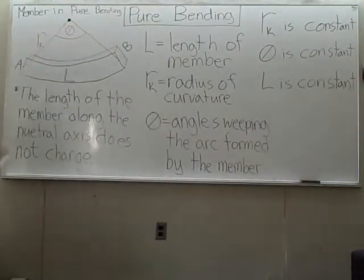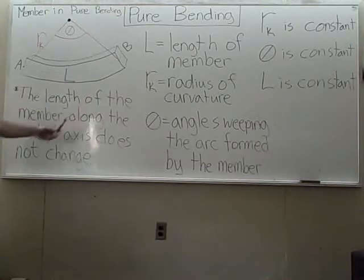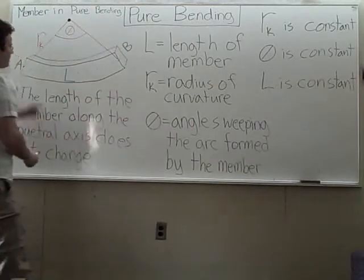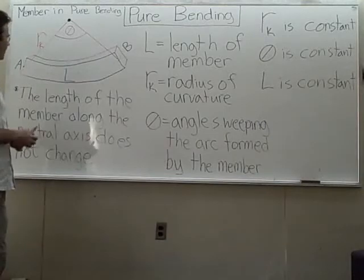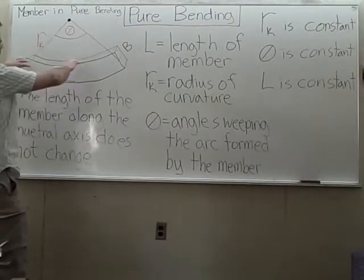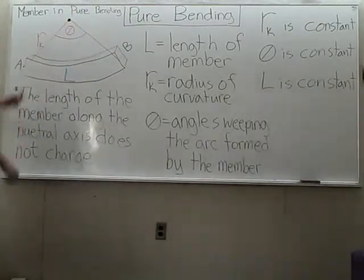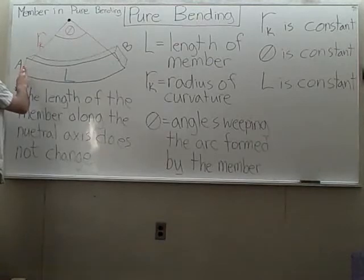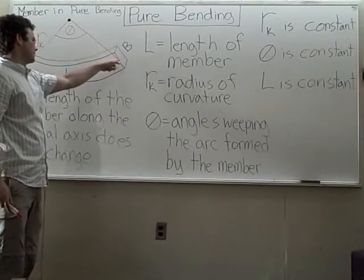So right up here we have our member in Pure Bending. Here's our member — it has a length L, and the length of the member along the neutral axis does not change. No matter how much this bends or stays the same or bends down, the length of the neutral axis is going to remain the same as the length of the member. When the member does bend, it's going to form an arc — part of an overall circle. The radius of that circle, called the radius of curvature, goes from the center of that circle to the neutral axis at point A and from the center of the circle to the neutral axis at point B.